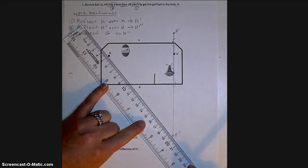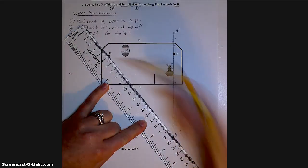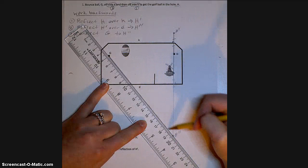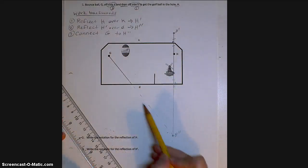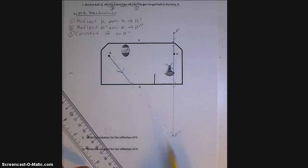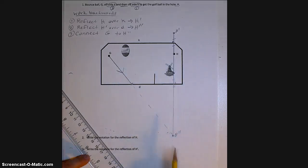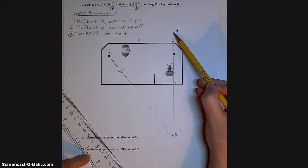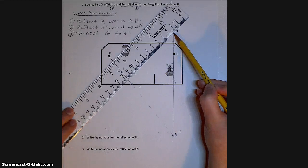When you connect this, be careful. The golf ball is not really going to go through the wall. This is just the reflection. So I need to make this part dotted and this part solid because that's where the golf ball actually is traveling. And then after it hits this wall, it's going to bounce to the next reflection point, H prime.